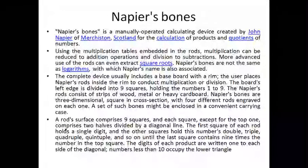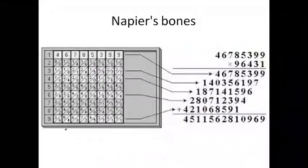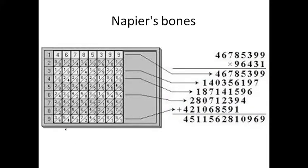Napier's Bones consisted of a set of rectangular rods — a set of 11 rods. It was called 'bones' because the rods were held in the hand. Sir John Napier was a Scottish mathematician who also designed the system of logarithms, which greatly speeded up calculations.